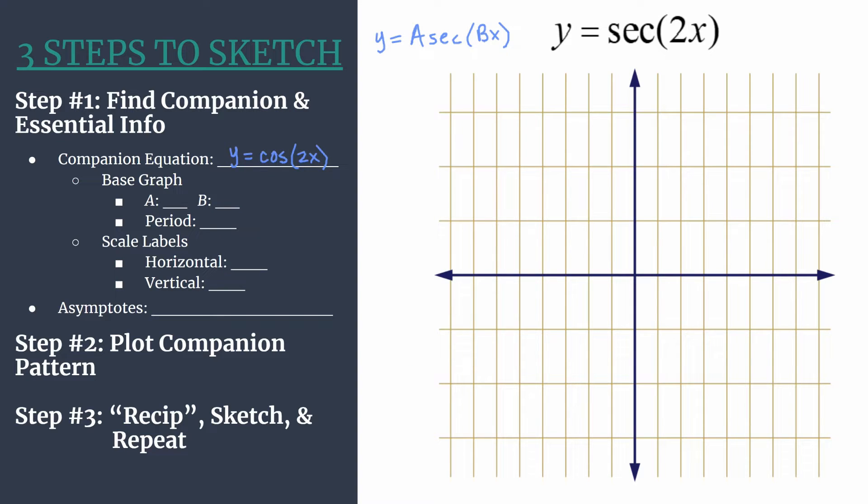Now we're going to get all of the information organized to graph the companion equation. We start looking at a, which is the leading coefficient and understood 1. So our amplitude of our cosine graph will be 1. That's the distance from midline to maximum or to minimum.